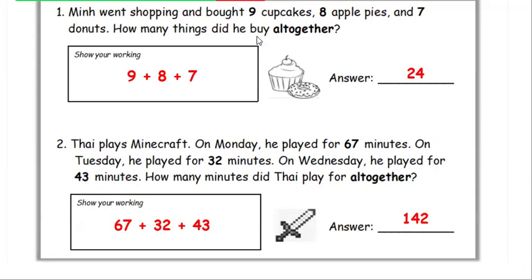How many things did we buy all together? Answer: 24.